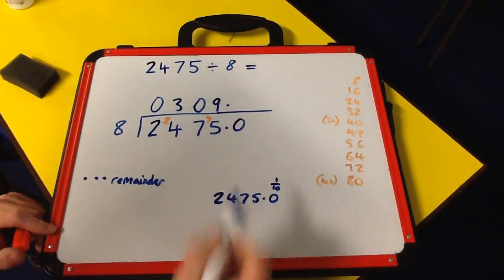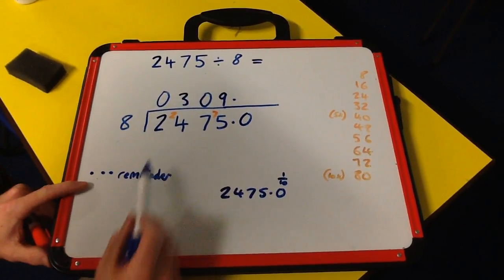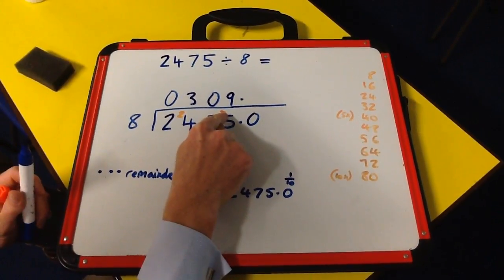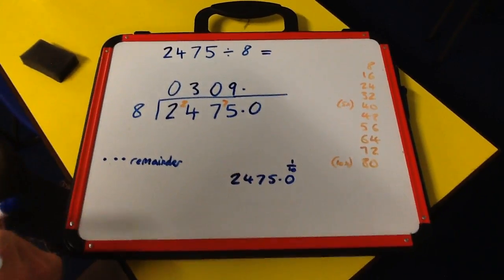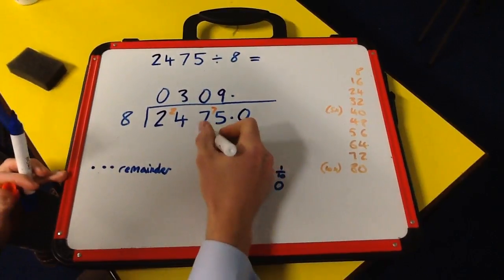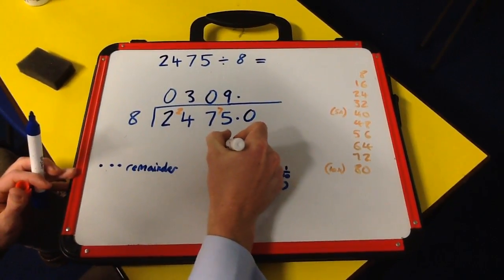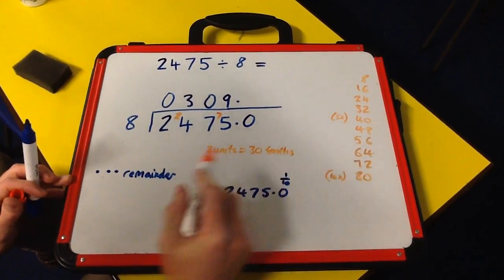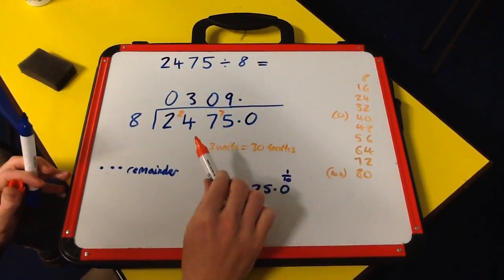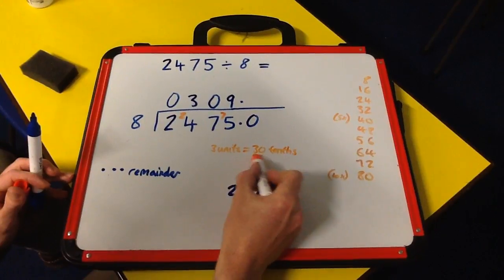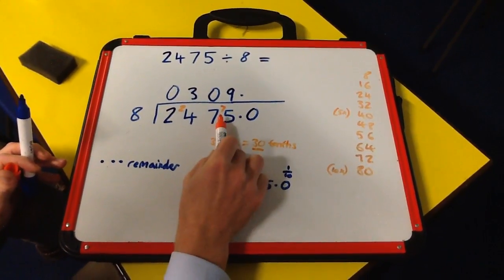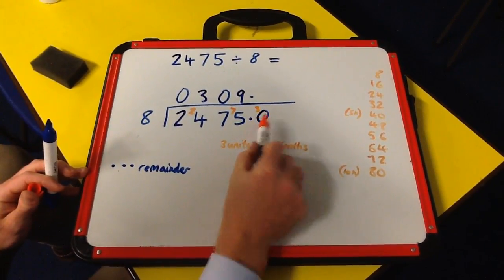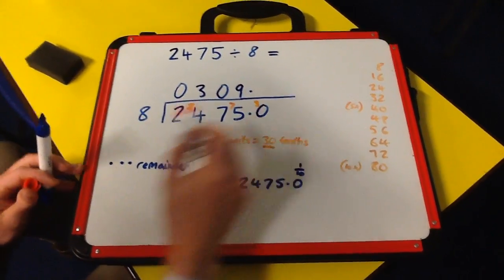Remember we've got 3 left over—our remainder of 3. Just like before, we carry it to the next place value. 3 units is the same as 30 tenths. When you go one place value to the right, it has to be 10 times more to be equal in value. So we put these 3 units over here as 30 tenths.